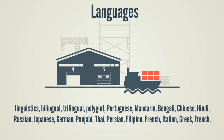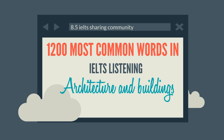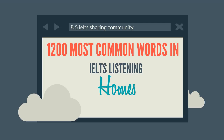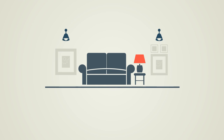Languages and Linguistics: Bilingual, Trilingual, Polyglot, Portuguese, Mandarin, Bengali, Chinese, Hindi, Russian, Japanese, German, Punjabi, Thai, Persian, Filipino, French, Italian, Greek. Architecture and Buildings: Dome, Palace, Fort, Castle, Glass House, Pyramid, Log Cabin, Lighthouse, Hut, Skyscraper, Sculpture.